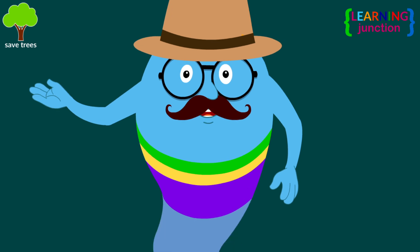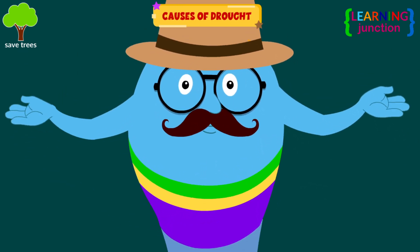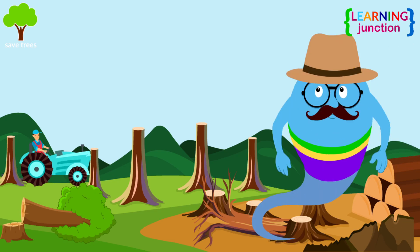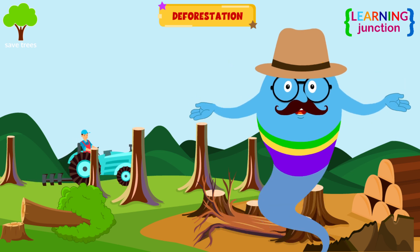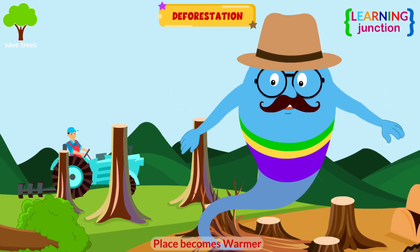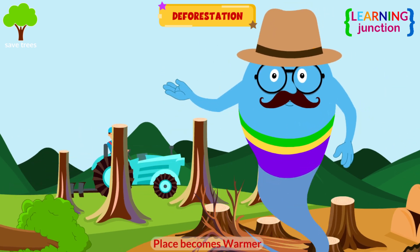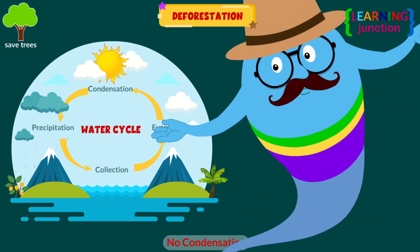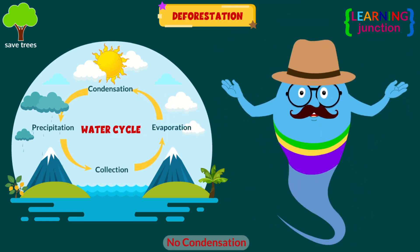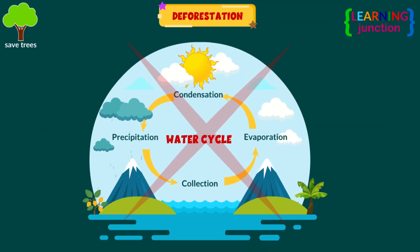Let's learn about the main causes of drought. Deforestation — when trees are cut down, the place becomes warmer. Thus, the water vapor in the air does not condense to form clouds, and it causes droughts.